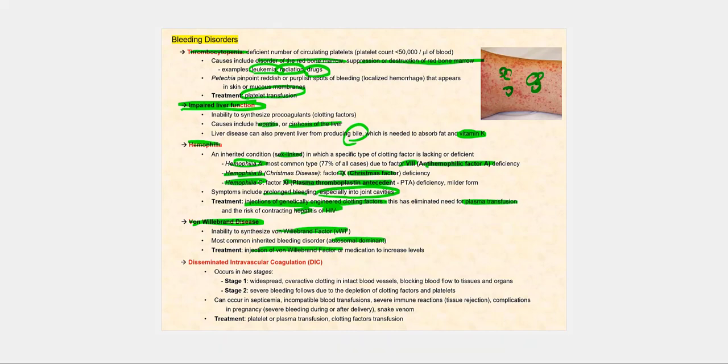The last type of bleeding disorder is disseminated intravascular coagulation, DIC. It occurs in two stages. Stage number one, we have a widespread overactive clotting that occurs in intact blood vessels. Therefore, we're going to disrupt blood flow to tissues and organs.